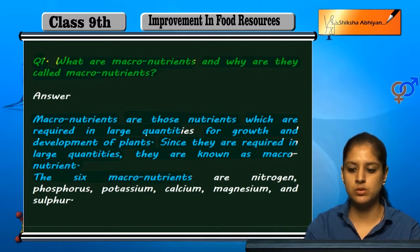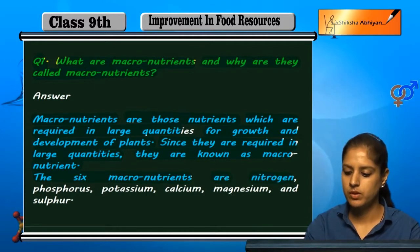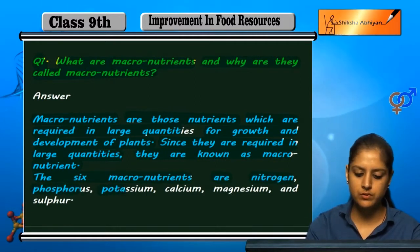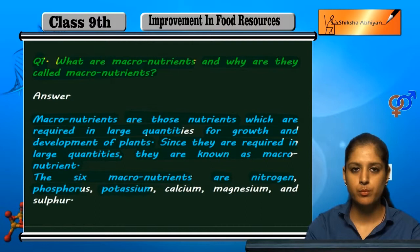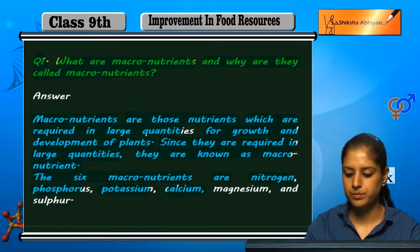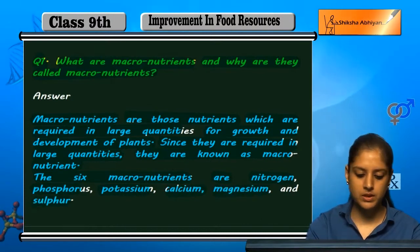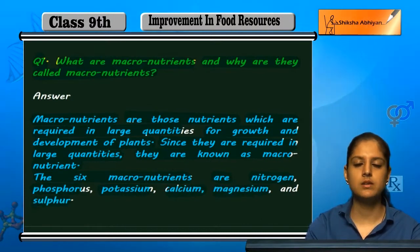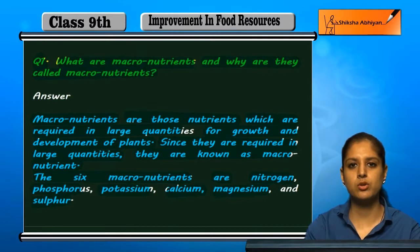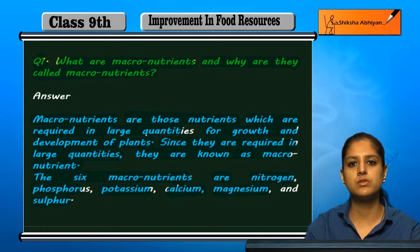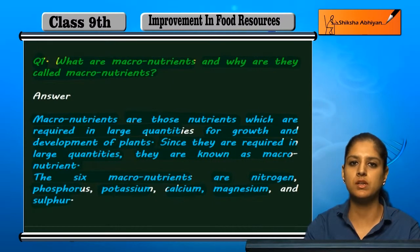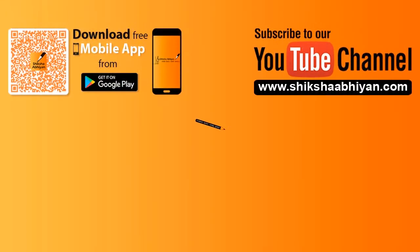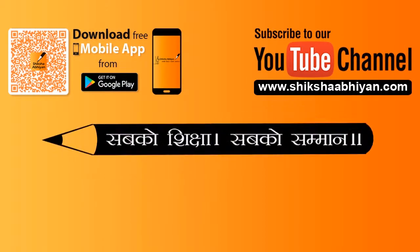So six macronutrients hain jo plants ke liye zaroori hoti hain — woh hain nitrogen, phosphorus, potassium, calcium, magnesium, and sulfur. Yeh six macronutrients hain, aur yeh six nutrients large quantities mein plants ki better growth ke liye chahiye hoti hain.